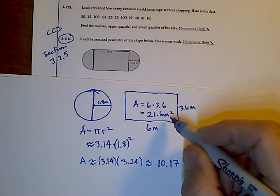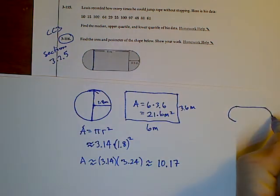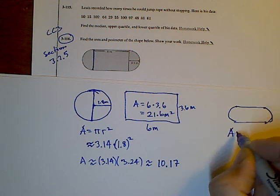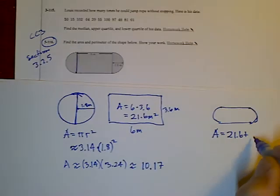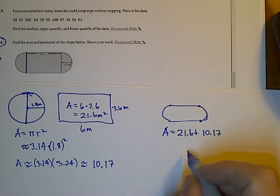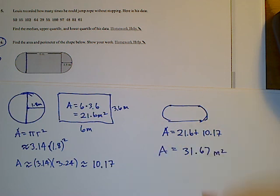That's the area of the rectangle. So in order to find the area of the whole thing, so the area of this would be those two added up: 21.6 plus the 10 and 17 hundreds. So adding those two together, we have a total area of 31 and 67 hundreds, and that's meters squared. So that's my area of that figure.